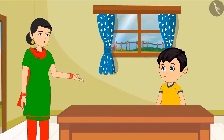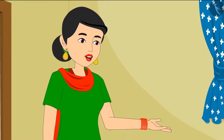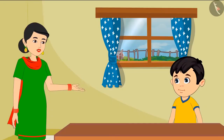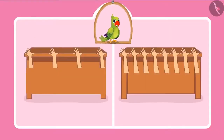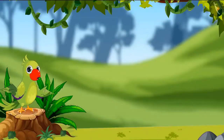Mother explains that while measuring objects, we should not leave space between two hands. If we miss any space in between, the measurement will be wrong. Chotu understands: whenever a measurement is made, there should not be any space left between two measures. You should not leave a space between two hand spans.